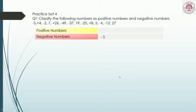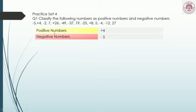The first question is: classify the following numbers as positive numbers or negative numbers. Make two groups — positive and negative — and consider each number one by one. The first number is −5: it is negative, so it goes in the list of negative numbers. The next number is 4: it is positive, so 4 goes in the positive numbers list.